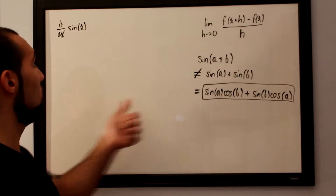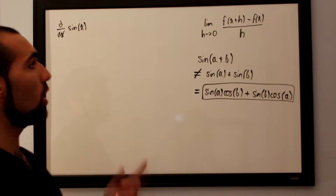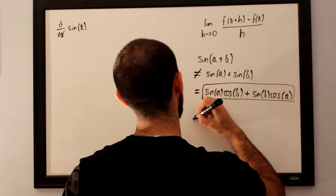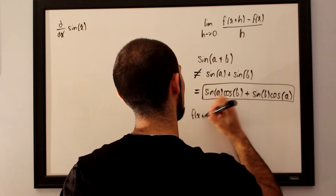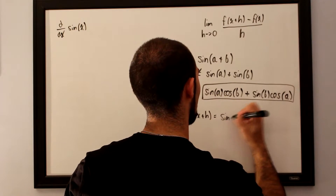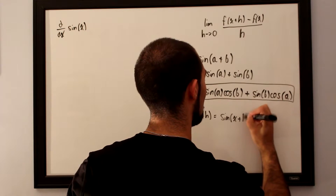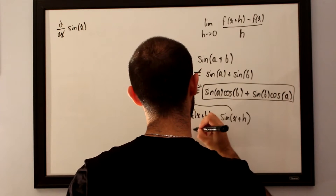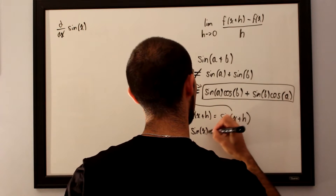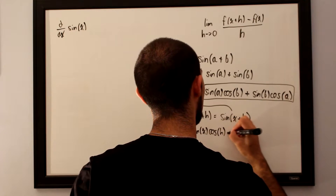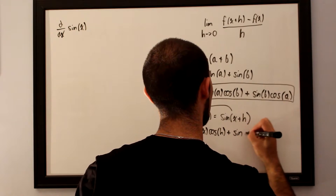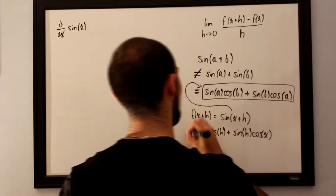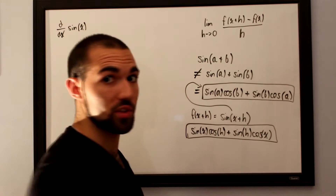What we'll be doing is determining what our f(x+h) is. f(x+h) is equal to sine of (x+h), which using the addition formula becomes sine of x cosine of h plus sine of h cosine of x. So this entire expression is our f(x+h).